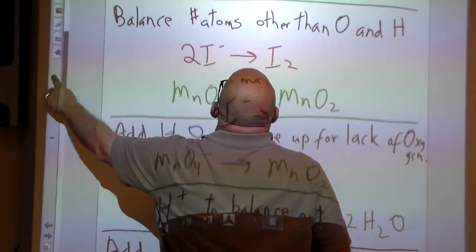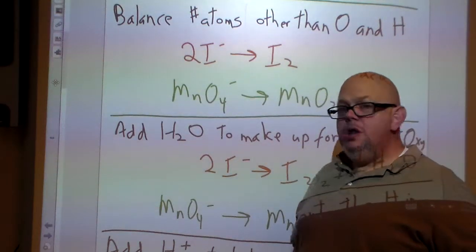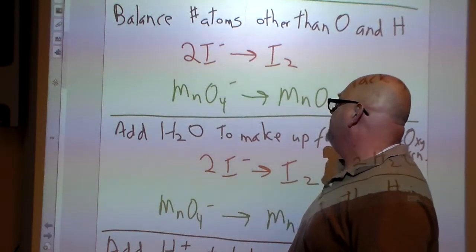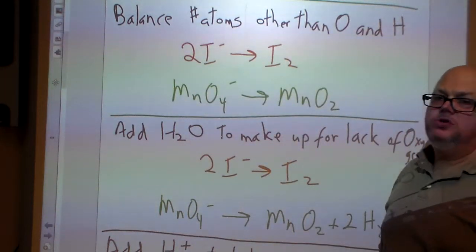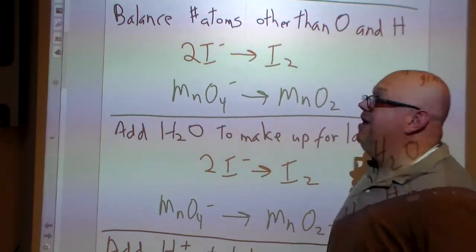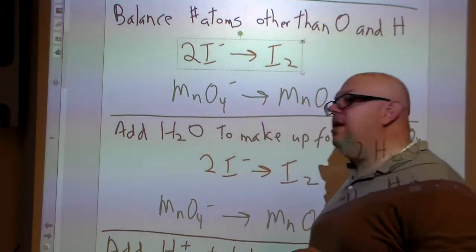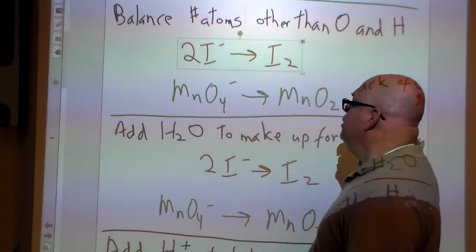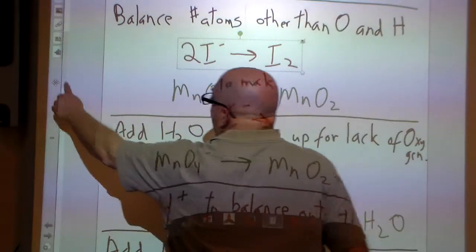Our second thing is we need to balance the atoms other than O and H. When you have an imbalance like this, you need to balance it out. So that's why we have 2I minus gets us I2. Notice we didn't need to worry about the MnO4 and MnO2. But somebody might be saying, the oxygen atoms are not balanced. Relax, we're going to take care of it. What we're interested in is our main characters here. The hydrogen oxygen, we're not so concerned about that because we can mess around with it.